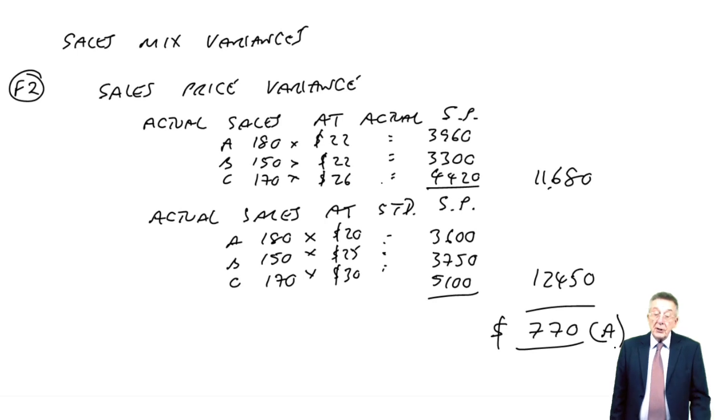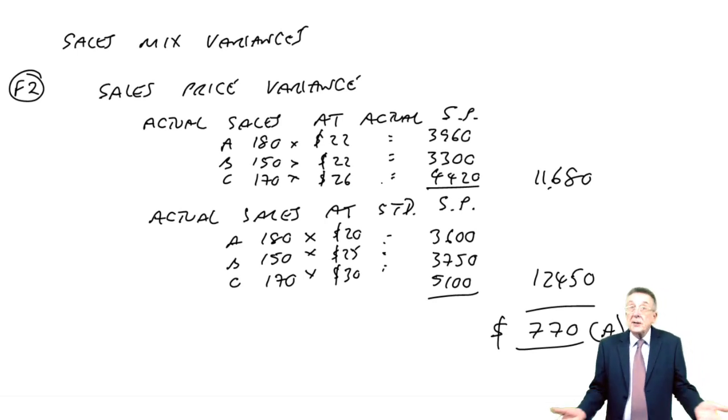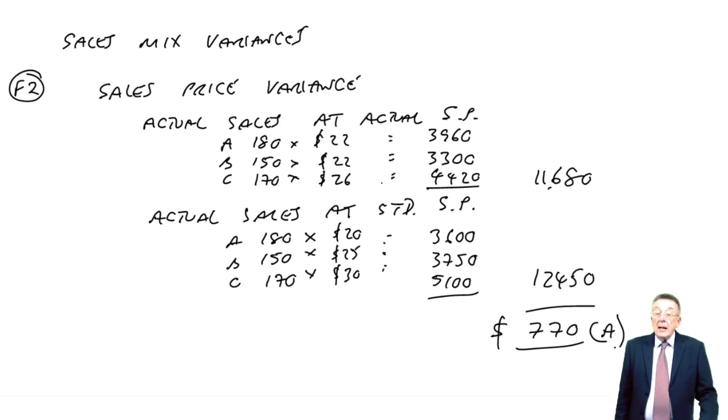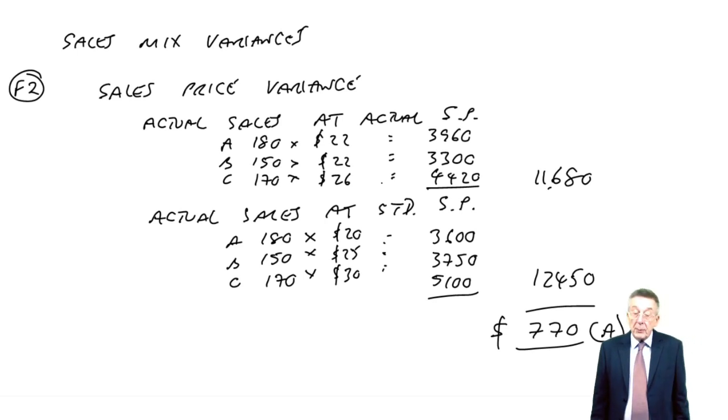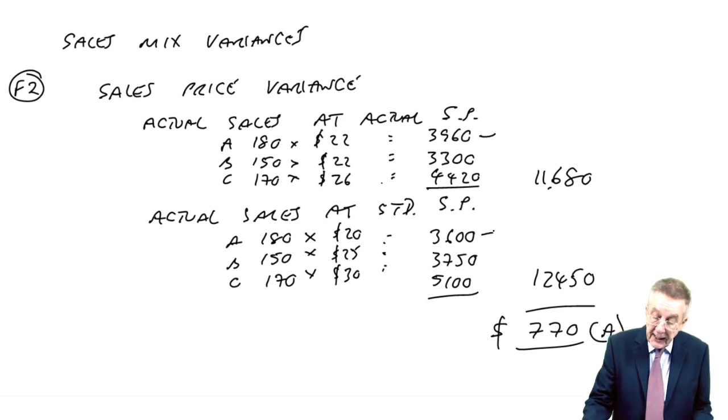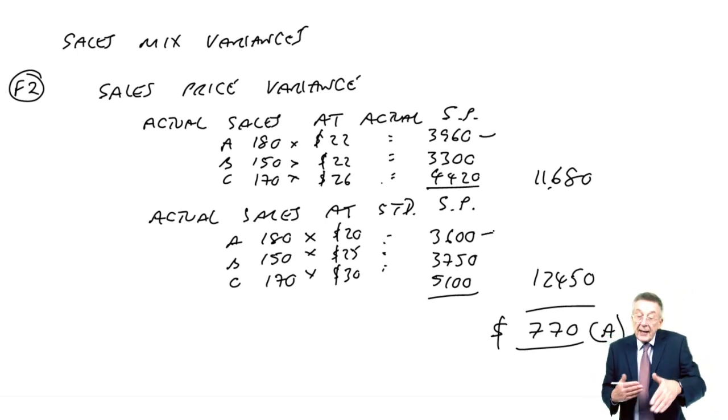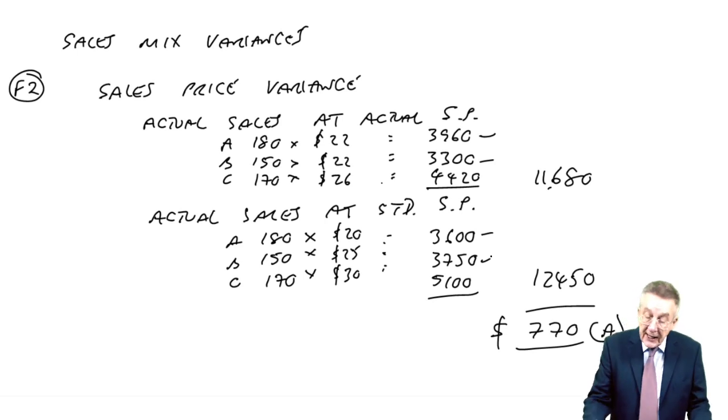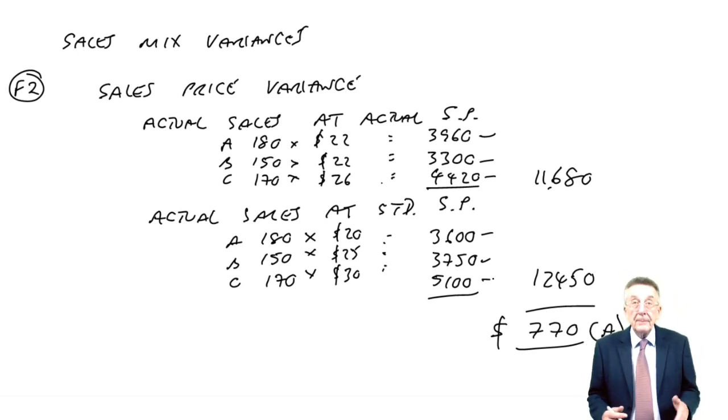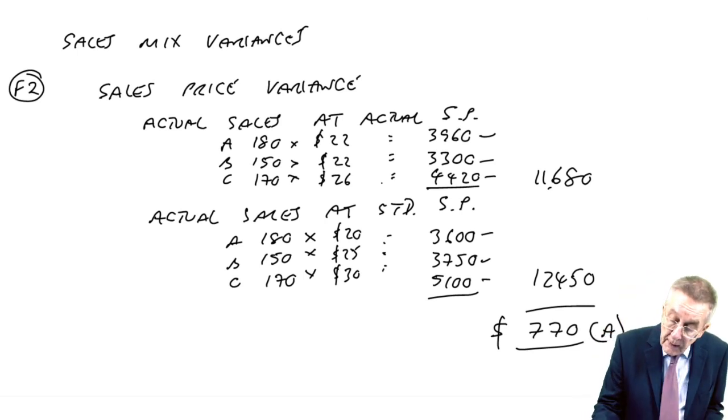Our actual revenue is a little bit less than the standard selling price, so it's adverse. So, that, no difference from normal, just takes slightly longer. As always, set it out any way you want. And, of course, you could have written the variance down for each one separately. For A, 3,960 against 3,600, so that's 360 favourable. For B, 3,300 against 3,750, that's 450 adverse. For C, 4,420 when it should have been 5,100. So, what's that? 680, I think, adverse. So, there, I hope, no problem at all. It's normal rule. It's just with 3 products, it takes a bit longer.